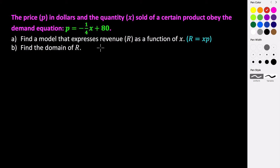Today we're looking at different situations that can be modeled using quadratic functions. The first example examines the price p in dollars and the quantity x sold of a certain product. They obey a demand function where the price equals negative one-fourth times the quantity sold plus 80 dollars.